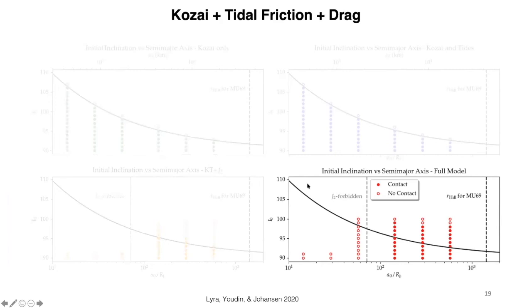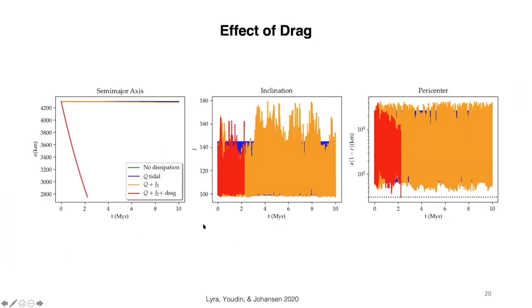And now the full problem with the permanent J2 and the gas drag. As you see here, the J2 forbidden window still exists. J2, the permanent quadrupole, still leads to precession, but you have a much larger window for contact due to the gas drag. So, let's see what is happening in here.